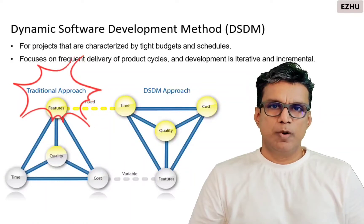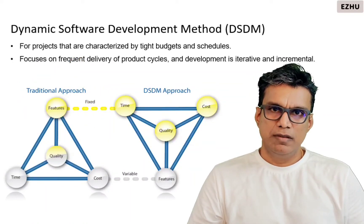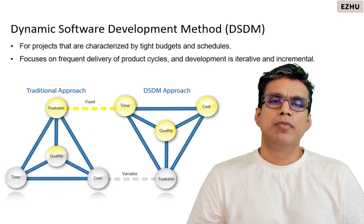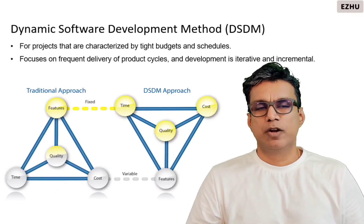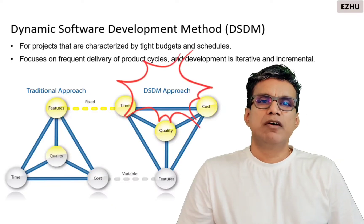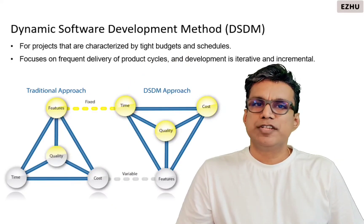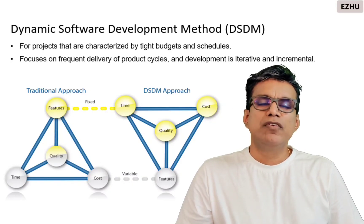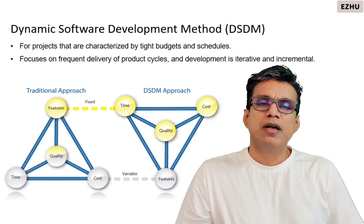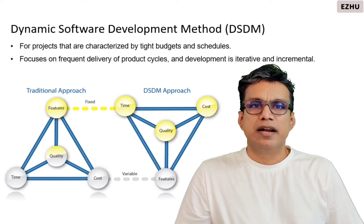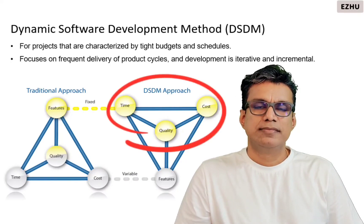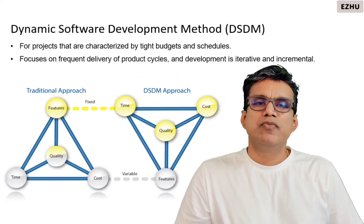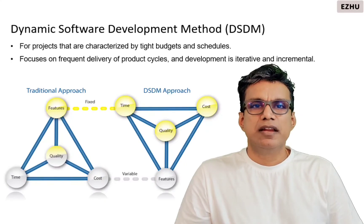In the traditional approach, the focus is primarily on features, and there is sometimes a compromise on quality, with slippages with respect to time and cost. The Dynamic Software Development method is for projects characterized by tight budgets and schedules. It focuses on frequent delivery of products where the development is incremental and iterative in nature. The focus is more on time, cost, and quality, with features developed in an incremental fashion.